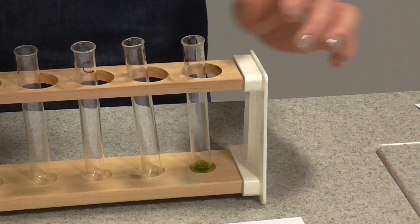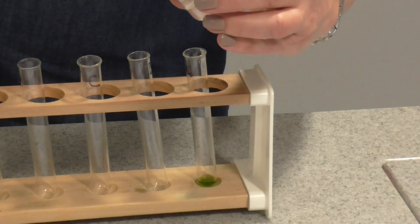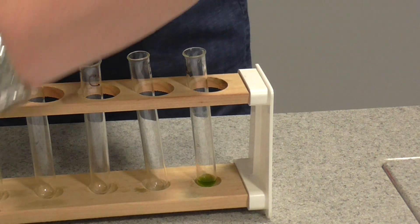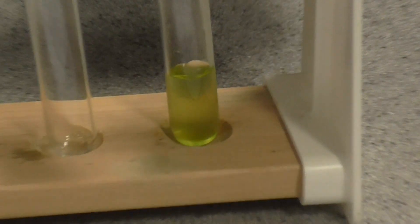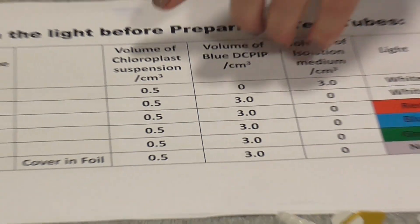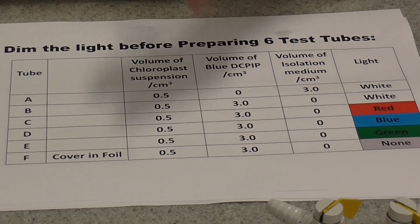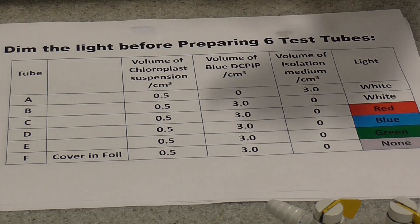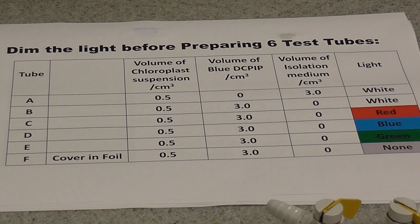Tube A is important because we're not going to put any DCPIP in there — it's what the chloroplasts will look like at the beginning, as if the DCPIP had already decolourised. In the rest of the tubes, put 0.5 centimetres cubed of chloroplast extract in each one, including the one wrapped in foil, and add three centimetres cubed of DCPIP to each tube. It's really important that you limit their exposure to light.